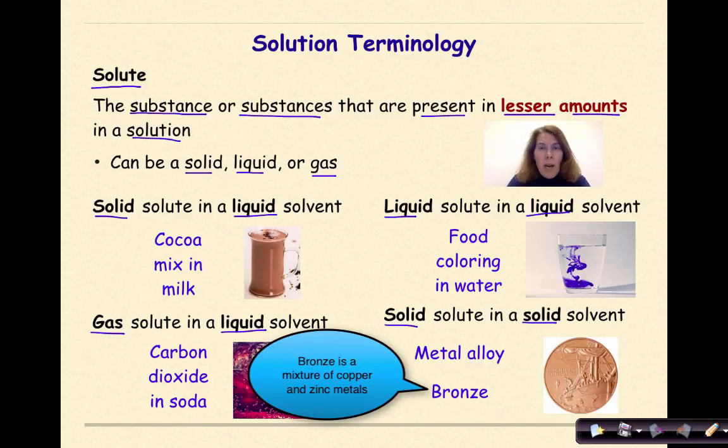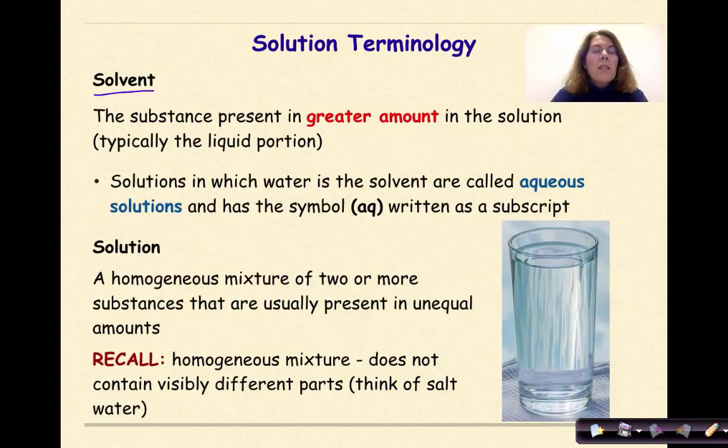Finally, think about a solid solute in a solid solvent, like a metal alloy such as bronze. The solvent is the substance present in greater amount in the solution. Typically, this is the liquid portion. Solutions in which water is the solvent are called aqueous solutions and have the symbol aq written as a subscript.